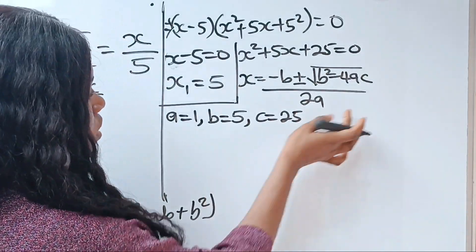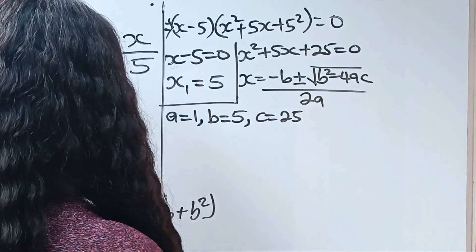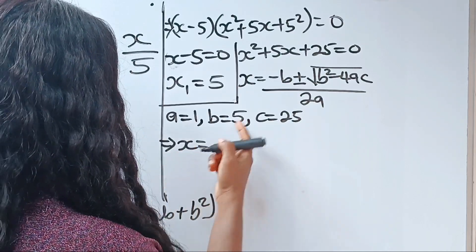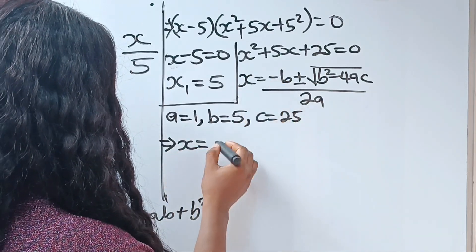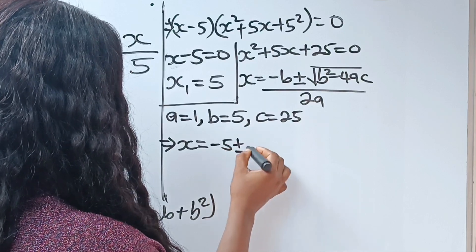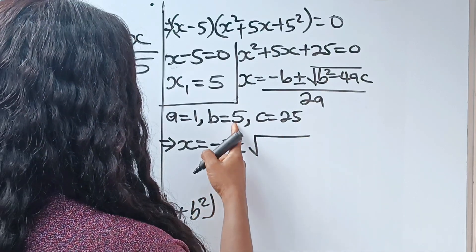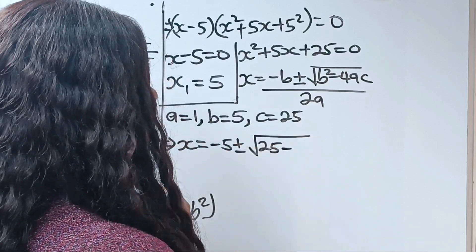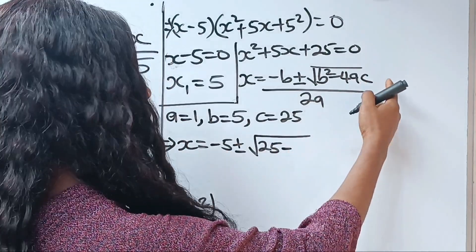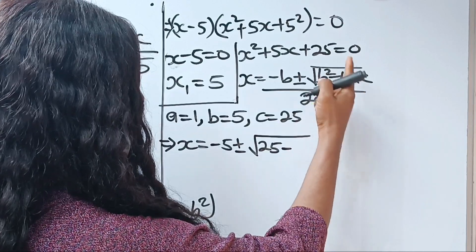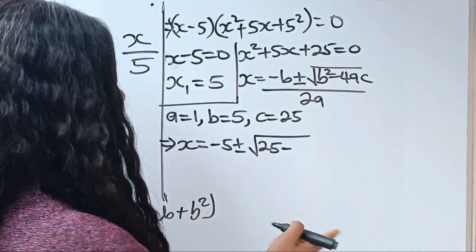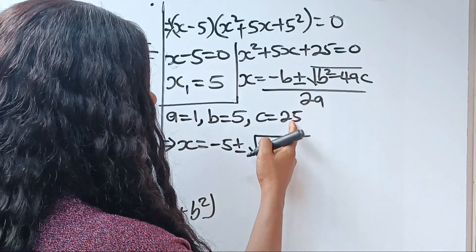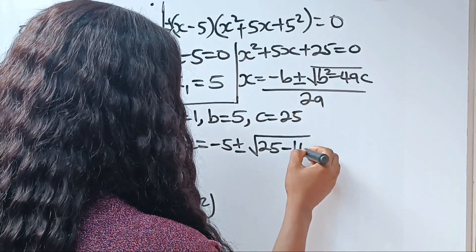So we are going to substitute into the formula to get the value of x. This gives x is equal to minus 5, plus or minus the square root of 5 squared, that is 25, minus 4ac. 4 times a, which is 1, gives 4; and 4 times c, which is 25, gives 100.